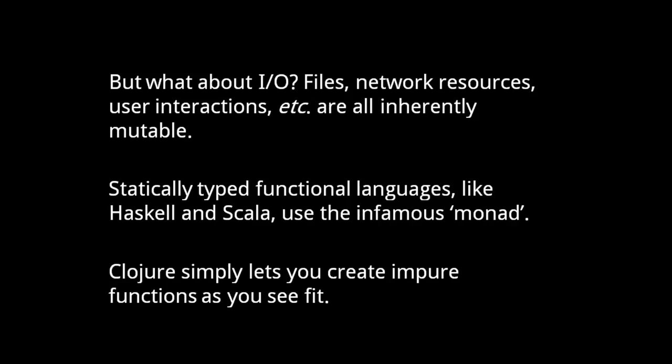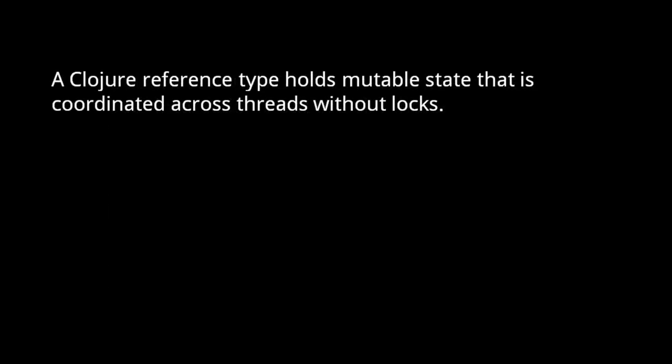A typical Clojure program is going to have some amount of mutable data. One major difficulty with mutable data is coordinating its use across multiple threads of execution. Threads can easily mess each other up when they share mutable data. To address this problem, Clojure provides what it calls reference types. A Clojure reference is like a mutable collection that stores just one element, and the operations that access and replace the element ensure some kind of coordination across threads. References allow us to synchronize threads without using locks, which are notoriously cumbersome and error prone.